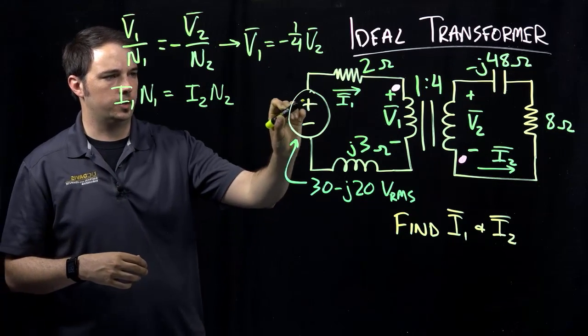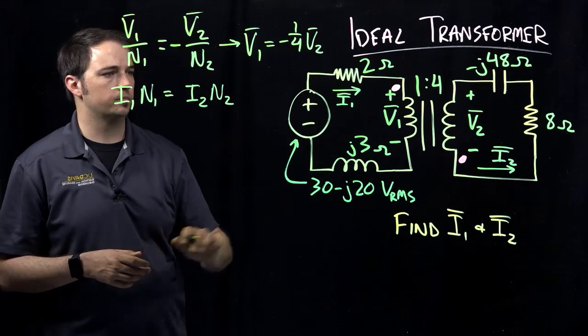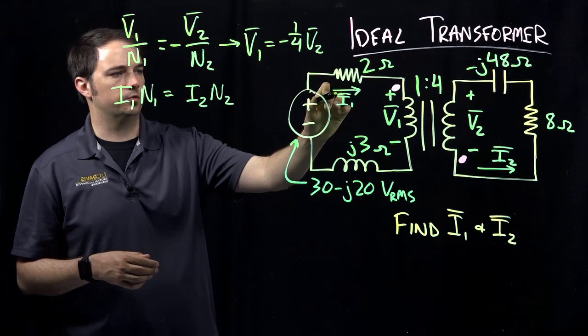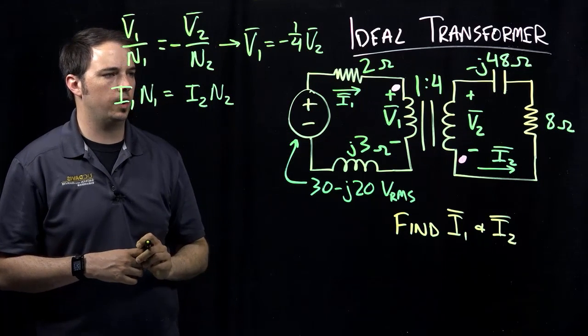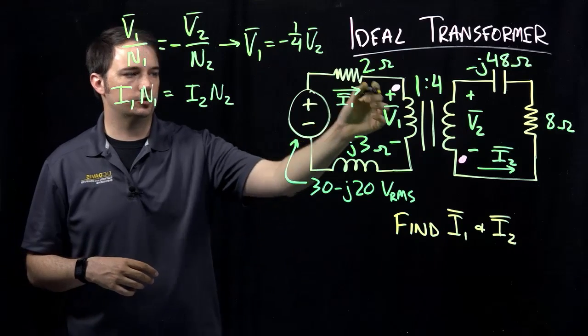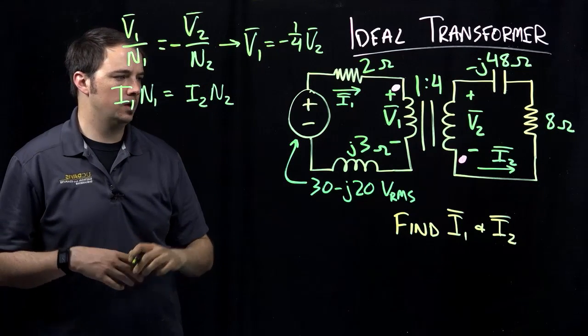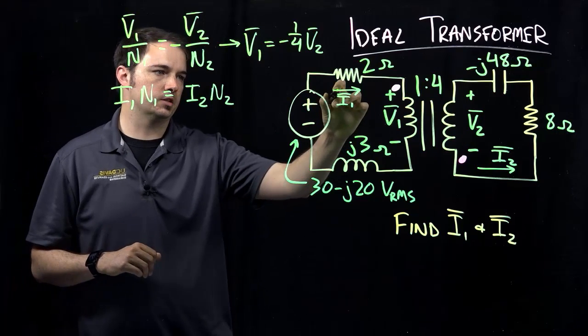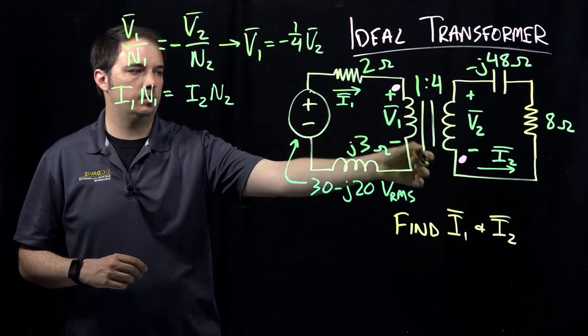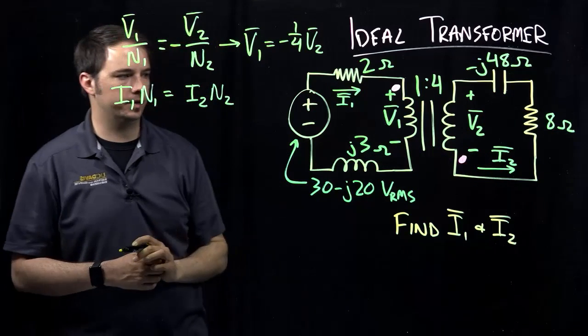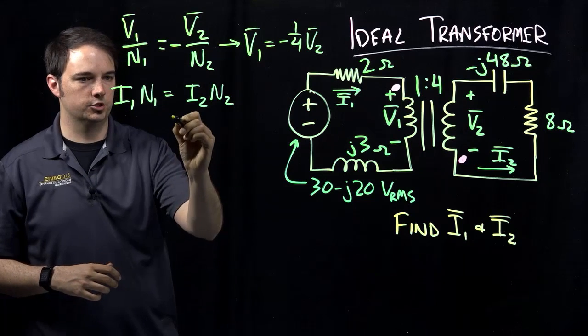Which again, in this problem, the currents are given to us already. We see here that the dot convention tells us that if both currents are flowing into or out of the dotted terminals on either side, then this should have a negative sign in the equation. But again, we're in the opposite case where here we have I1 flowing into the dot on the primary side, but I2 is flowing out of the dot on the secondary side. So therefore, this should in fact be a positive relationship.